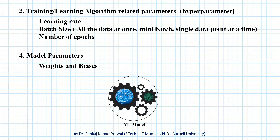then we have to decide the training or learning algorithm related parameters like learning rate, batch size — that is whether we are going to use all the data at once for training, or we are going to divide our data set into smaller batches.